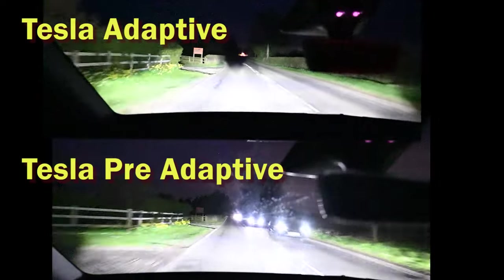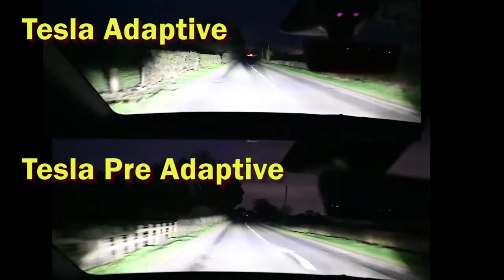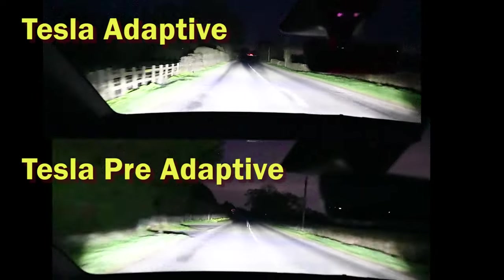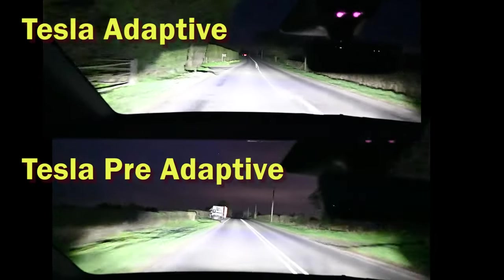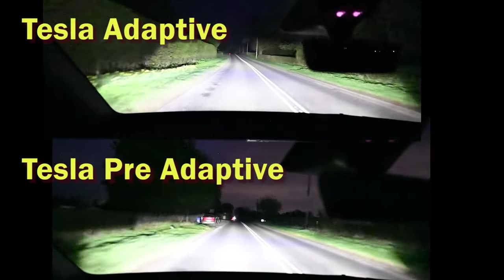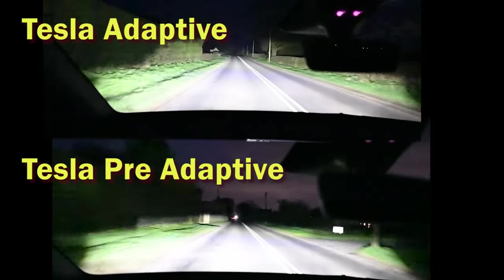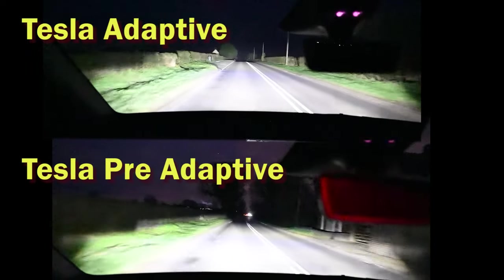One thing we notice with the adaptive headlights is it will occasionally blank certain parts of the headlights, like it's doing now. It's just cleared it even when there's no obvious reason why. I suppose it's being slightly more cautious, but in general it will obviously keep a lot more of the full beam headlights on when it can.